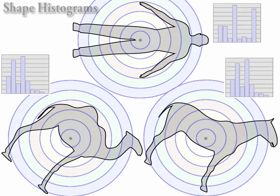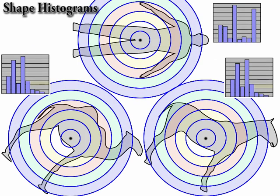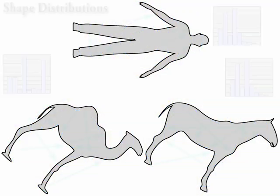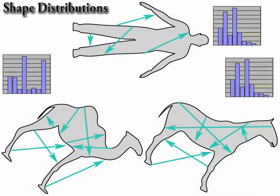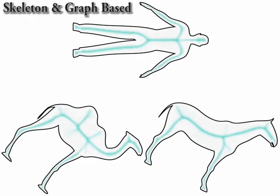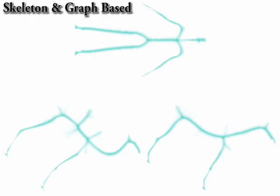Many other ways to compute shape signatures exist. Each of them captures different aspects of the shape — some are simple to compute and some are complex, some result in fast retrieval time and some are slower.